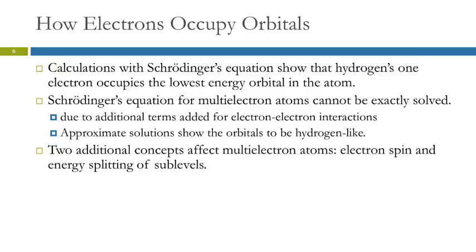Calculations with Schrödinger's equation for hydrogen show that the one electron in hydrogen occupies the lowest energy orbital. Like many things in nature, things tend toward lower energy — a ball on a hill rolls down, not up. Schrödinger's equations for atoms with more than one electron can't be exactly solved, only approximated, due to additional interaction terms between electrons. But the approximate solutions show those orbitals are like hydrogen's. Two important concepts are electron spin and energy splitting.